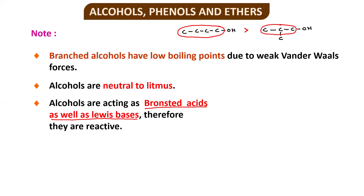A question arises: if alcohols are neutral to litmus, how can they also act as Brønsted acids and Lewis bases? This is possible because litmus changes color only in the presence of Arrhenius acids. Alcohols acting as Brønsted acids or Lewis bases do not show color change with litmus, but they do react with other compounds.